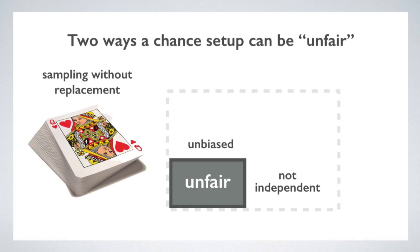Now if we look at the lower left quadrant, we want an example where the outcomes are unbiased but not independent. The textbook examples that fit this profile involve sampling without replacement. This is common with card games. Before I draw any cards, the chance of drawing a heart is 1 in 4, since there are 13 hearts in a deck of 52. Now I draw the top card, and it's the queen of hearts. I don't replace it. Now I ask myself, what are the odds that the next card is going to be a heart?